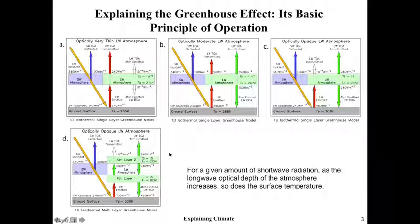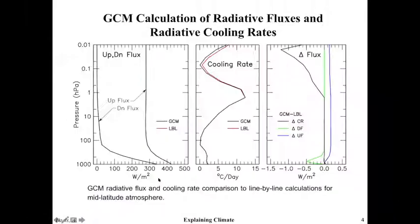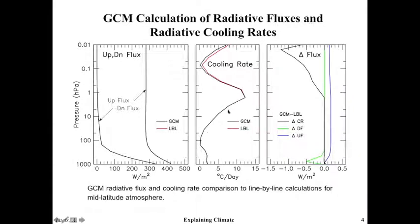The real atmosphere does not have these artificial boundaries. The layers are contiguous, and there's also convective energy transport that eliminates these discontinuities. This is what the fluxes look like in a real atmosphere: the upward flux from the ground, and the downward flux coming in from the top of the atmosphere — zero at the ground. In radiative transfer, we do upward and downward flux calculations, and differencing them gives you the cooling rate within the atmosphere.